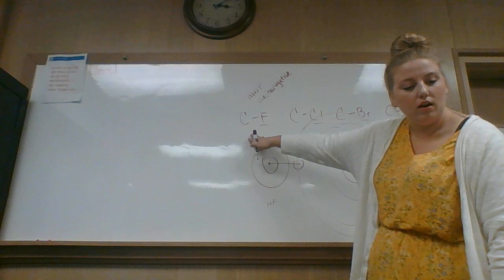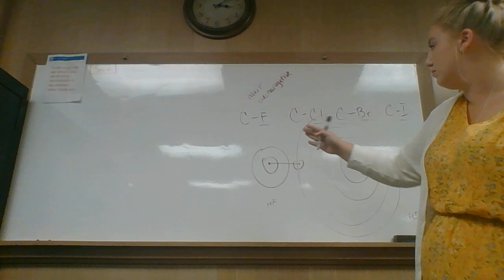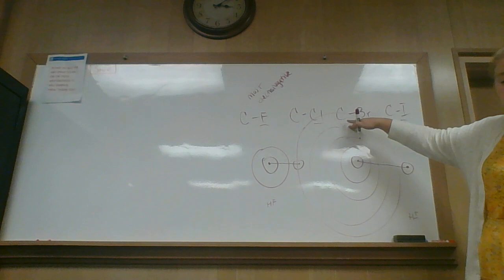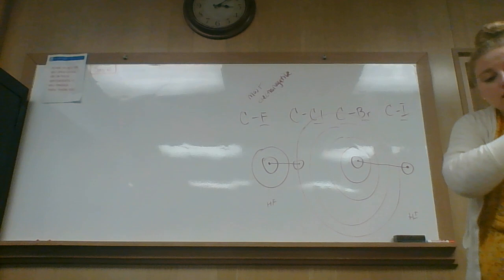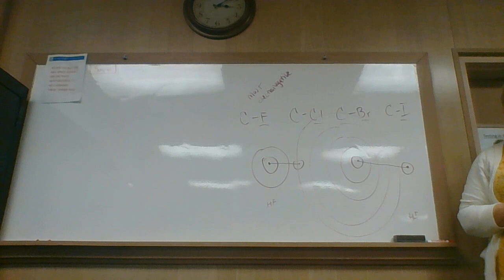So, fluorine — not only is it extremely electronegative, it's also very small — takes a lot of energy to break that bond. With iodine, even though it's still electronegative, it's so much larger that it takes a lot less energy to break that bond. If you look at Dr. Cosper's notes, it takes 110 units of energy for fluorine, then drops to 85, 70, 57. So essentially it takes a lot more energy to break the C-F bond than it does to break the C-I bond.